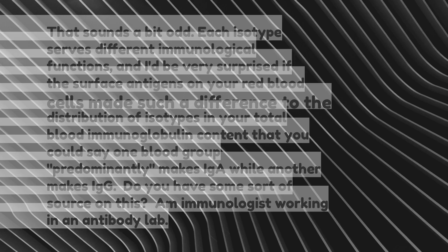That sounds a bit odd. Each isotype serves different immunological functions, and I'd be very surprised if the surface antigens on your red blood cells made such a difference to the distribution of isotypes in your total blood immunoglobulin content — that you could say one blood group predominantly makes IgG while another makes IgM. Do you have some sort of source on this?